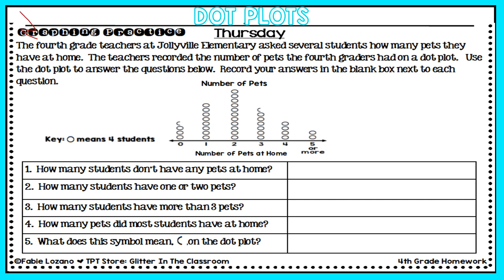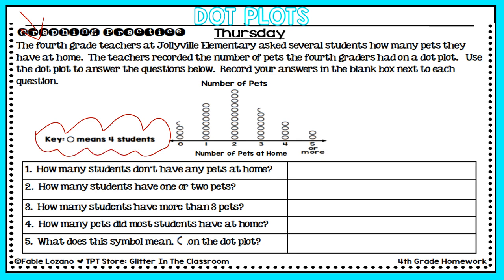The fourth grade teachers at Jollyville Elementary asked several students how many pets they have at home. The teachers recorded the number of pets the fourth graders had on a dot plot. Use the dot plot to answer the questions below and record your answers in the blank box next to each question. Remember to pay attention to those labels and descriptors. The title is 'number of pets,' and the labels at the bottom say 'number of pets at home.' The key is very important — the key tells me that every time I see a circle, it represents four students.